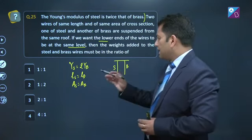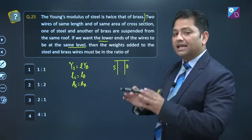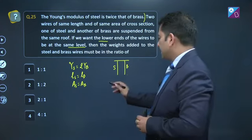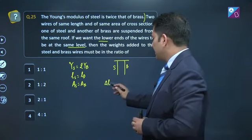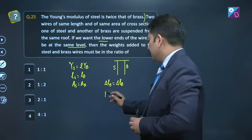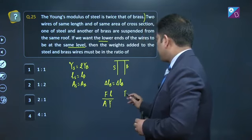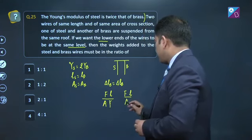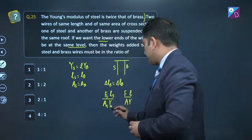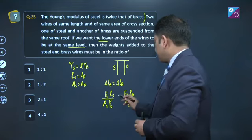So I want the lower ends to be at the same level. Iska matlab I want the elongation to be same, kyunki original length already same hai. That means this is required, elongation in steel should be equals to elongation in brass. Elongation ka formula hai fl by ay, aur yahan par bhi f l by ay. Chalo subscript dalte, this is steel, steel, alright, aur ye hai brass, brass, brass, and we will equate it.